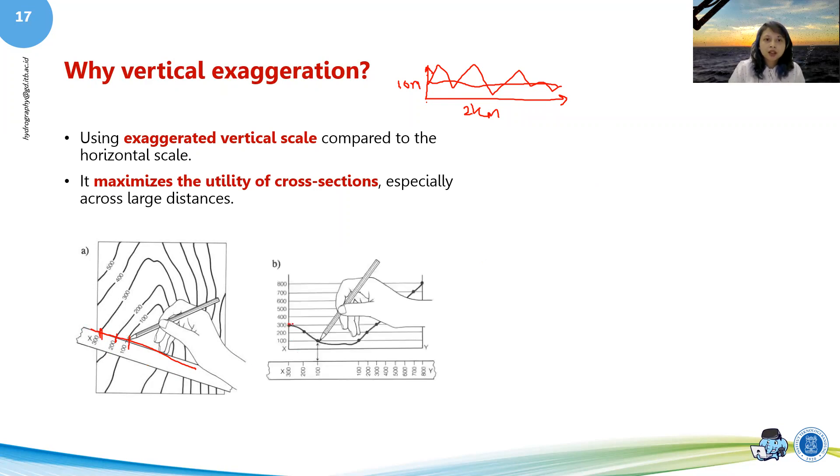So when we do it, we can make it something like this. So that's 300, this is 200, this is 100, this is the height. Okay, so this is basically your cross profile.